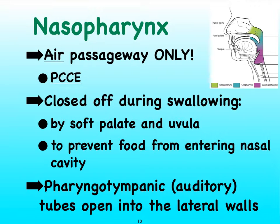To prevent food from moving up into the nasopharynx, we depend on our soft palate moving upward. That tiny little flappy thing that you see in the back of your mouth called the uvula is also going to play a role in closing off the nasopharynx when we begin the swallowing reflex.